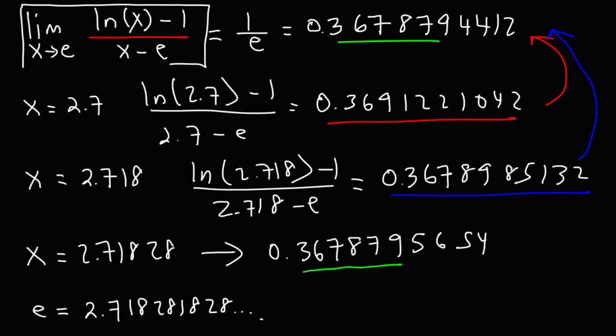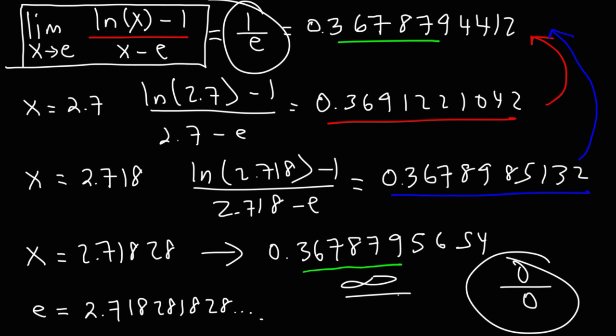The best thing to do, the most efficient way, is to use L'Hopital's rule. Because we have an indeterminate form, 0 over 0. So if we have this indeterminate form, or infinity over infinity, you could use L'Hopital's rule to evaluate the limit.